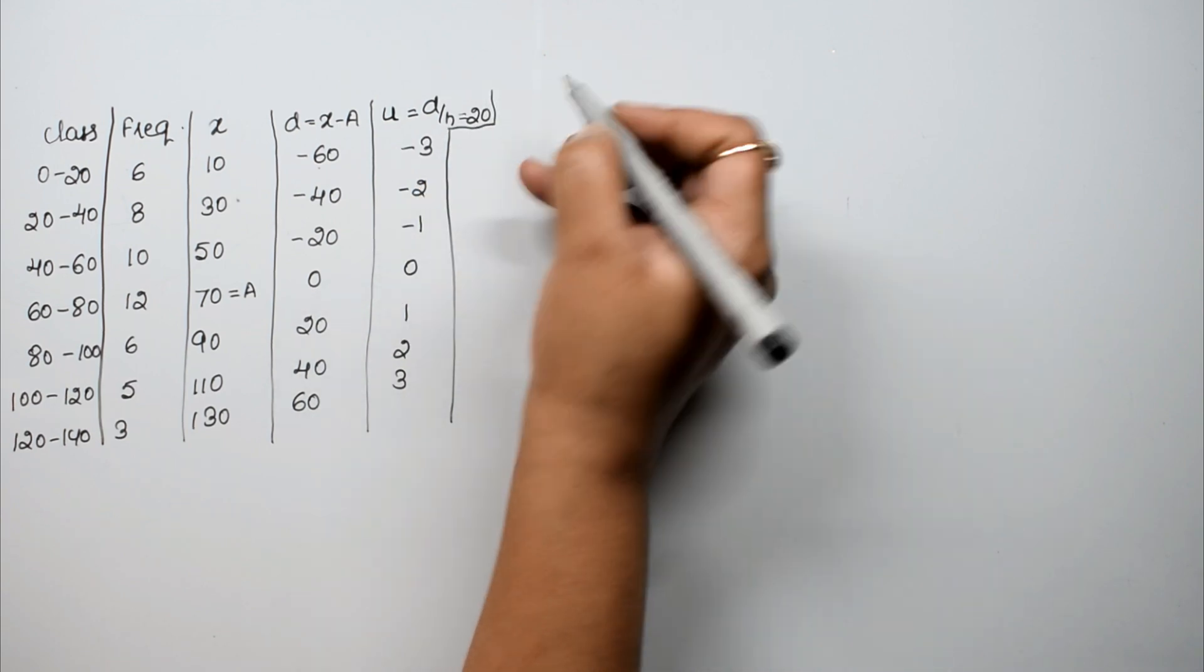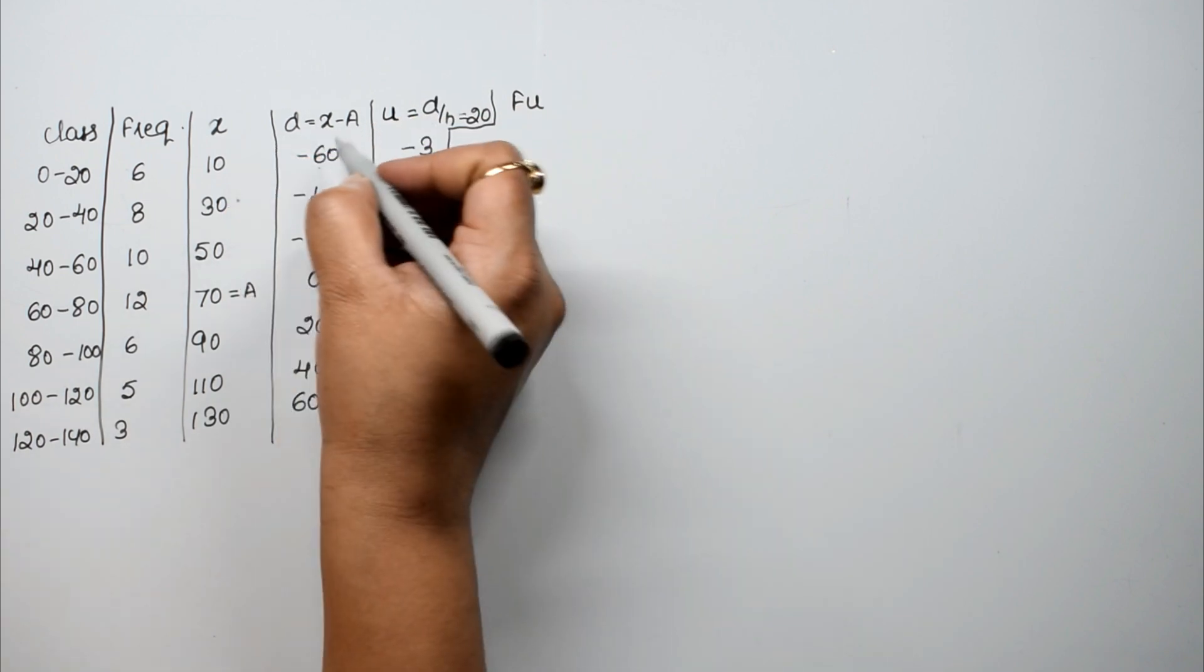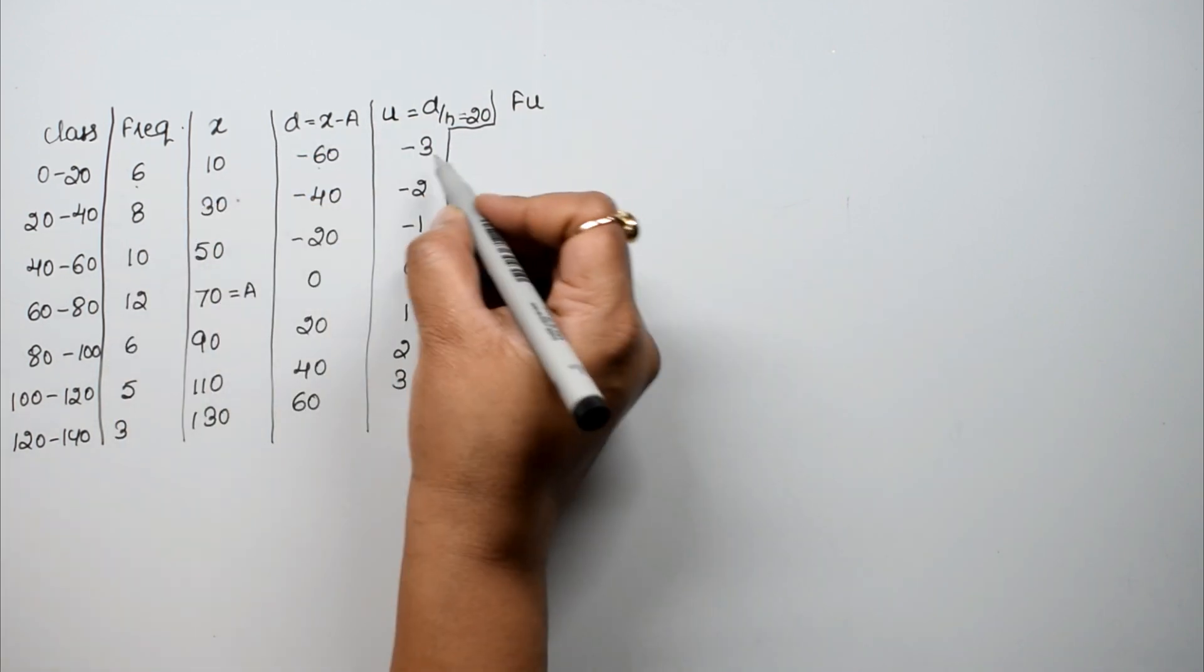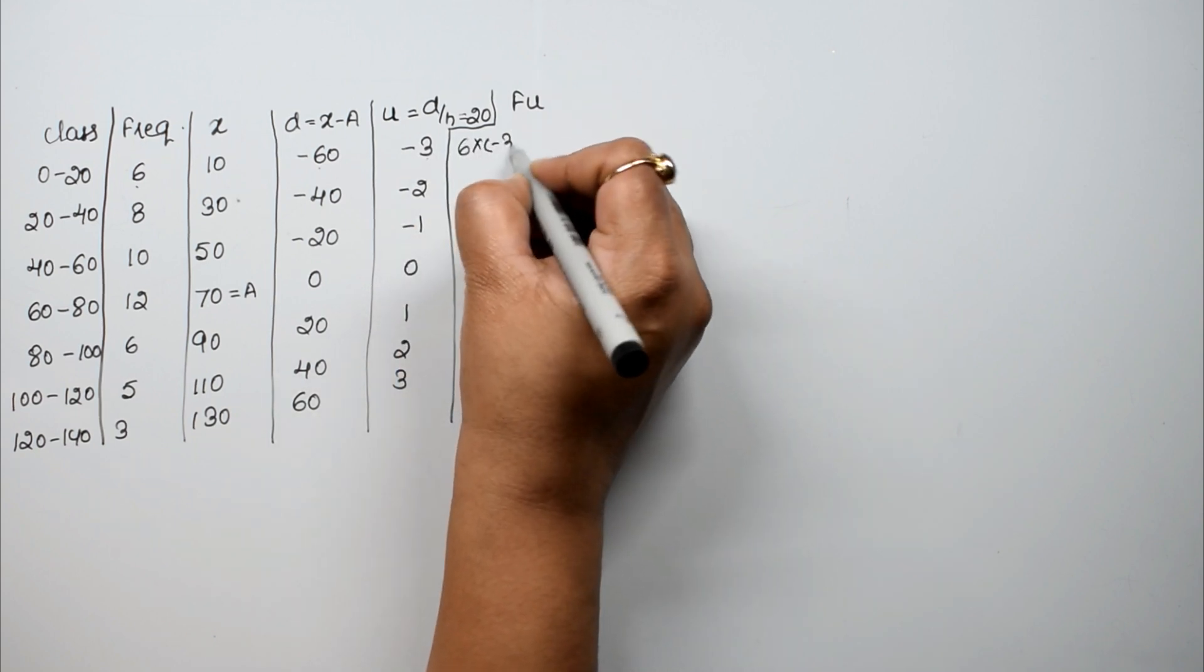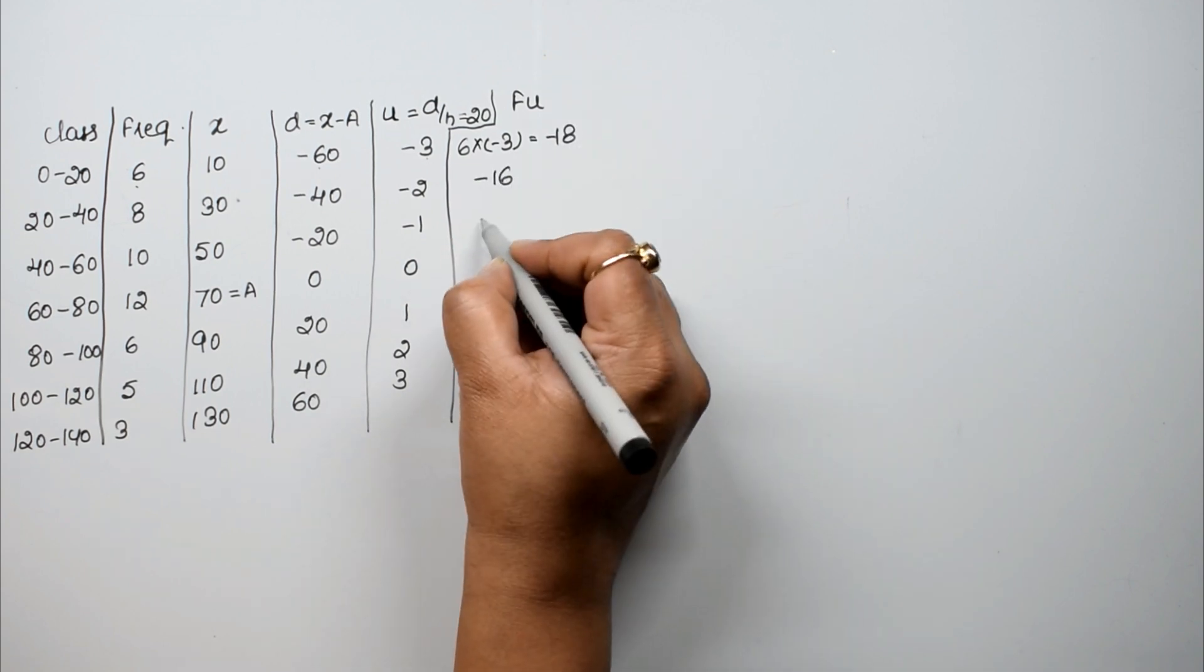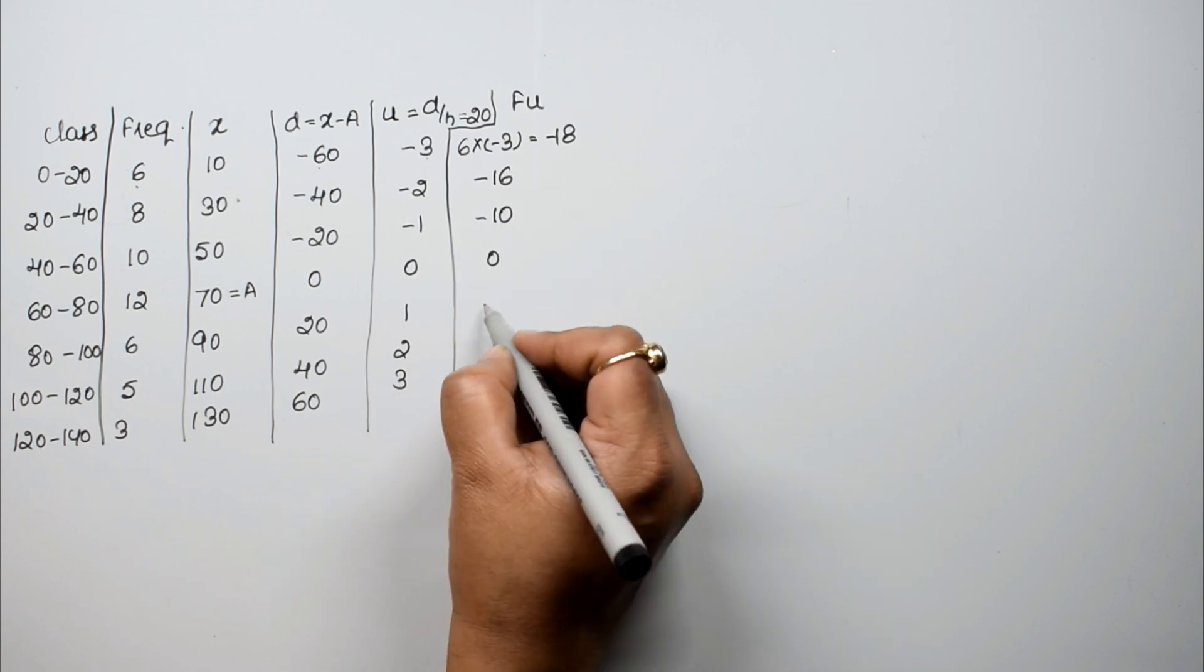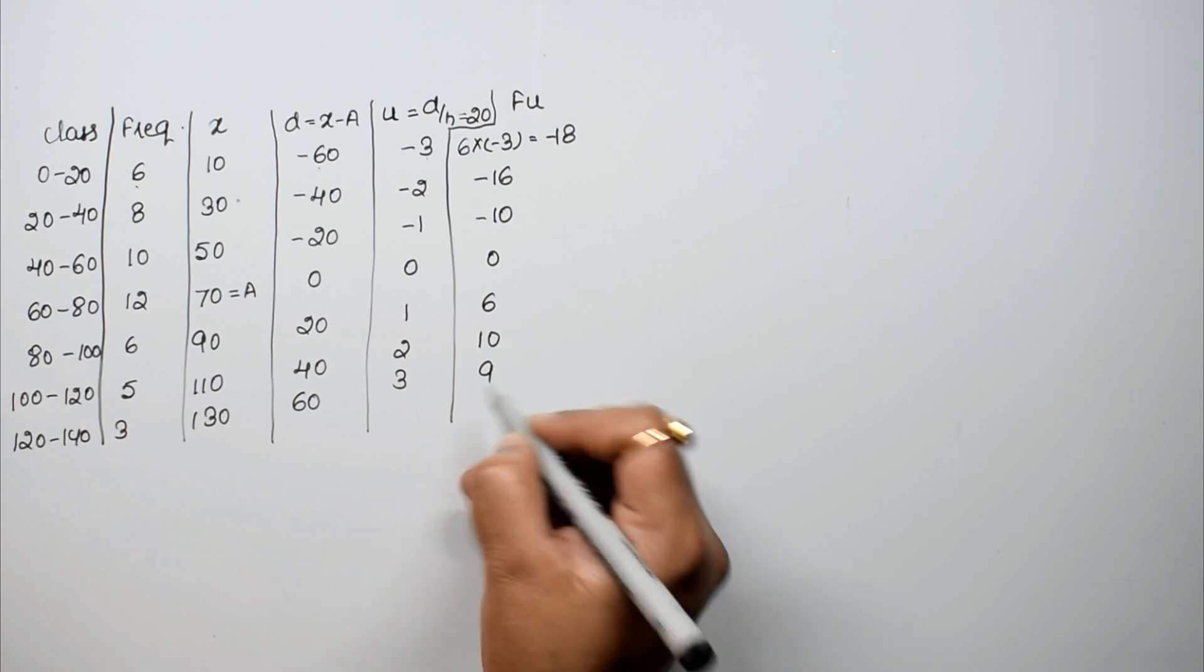Now what do we have to do? Now we have to do f u. First we have to do f d assumed mean, but now we have to do f u. This into this. That is 6 into minus 3 equals to minus 18. 8 into minus 2 is minus 16. 10 into minus 1 is minus 10. Then 0. 6 into 1 is 6. 5 into 2 is 10. And 3 into 3 is 9.